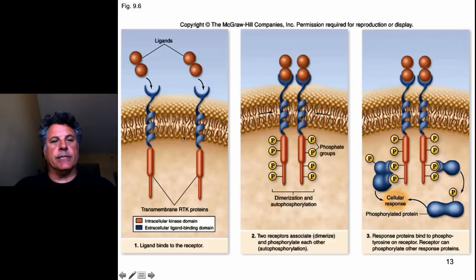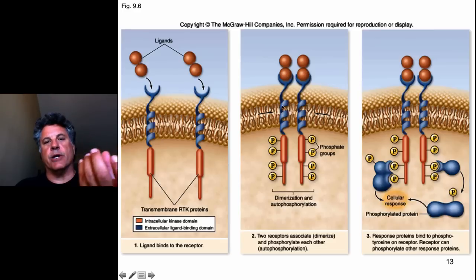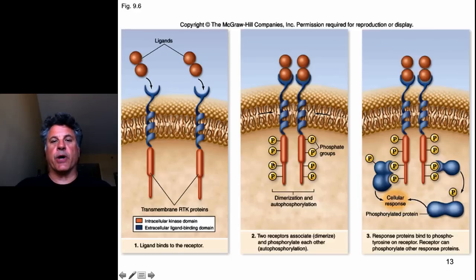Receptor tyrosine kinases are transmembrane proteins with an extracellular domain that can recognize an extracellular signal. When that happens, these proteins dimerize — they associate with each other in the plasma membrane, as though the ligand brings individualized receptors together to form dimers. When that happens, the intracellular catalytic domains phosphorylate each other at tyrosine residues. We call this autophosphorylation.